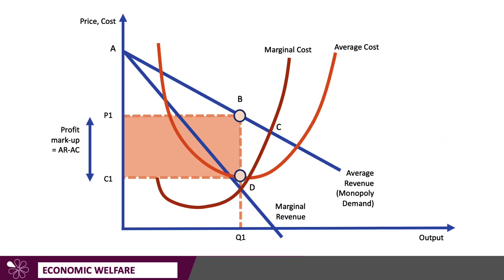Here's the monopoly diagram. The profit-maximising monopoly produces at Q1, where marginal cost meets marginal revenue. They charge the price P1, well above unit cost C1, so they make a high profit of P1, B, C1 — the shaded area. The price is above marginal cost, which is D, and the price is P1 at point B. So the level of consumer surplus here is going to be A, B, P1. Whereas if the price equalled the marginal cost of supply, the price would move down from B to C and that would increase consumer surplus. The deadweight welfare loss there is area B, C, D.